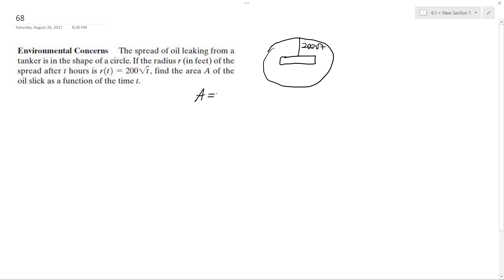So area in this case is equal to pi r squared and our rate r of t is equal to 200 square root of t and this is what we're plugging in for t.